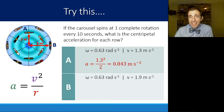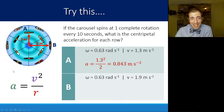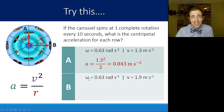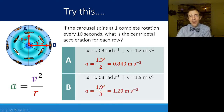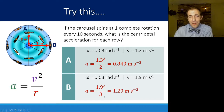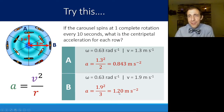Unlike angular velocity, centripetal acceleration does change between rows, because it depends on linear velocity, which also changed. For Row B: 1.9² over 3 gives approximately 1.2 meters per second squared.